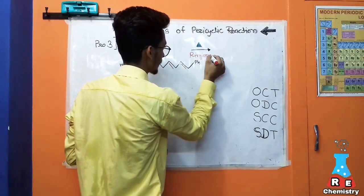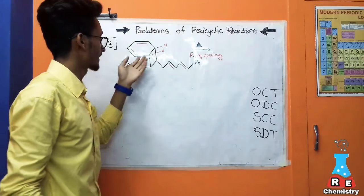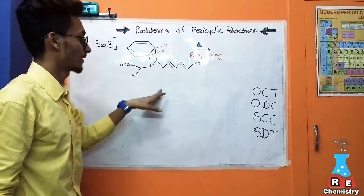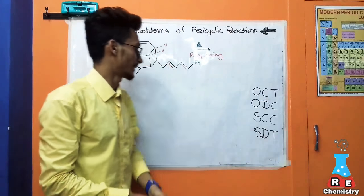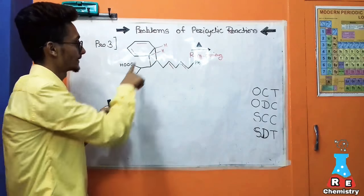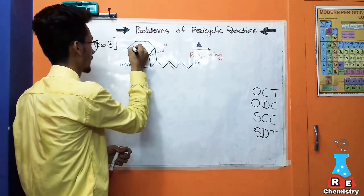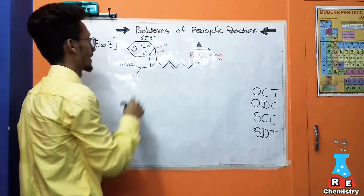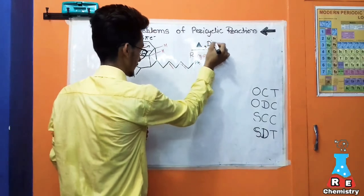In this reaction, total bonds participating: this bond migrates there, this bond migrates there, and this bond migrates there — three bonds. It means this is a 6π electron system. According to the selection rule, it's disrotation. Same direction and disrotation means trans form of substituents. Counting the atoms: 1, 2, 3, 4, 5, 6, 7, and 8 — that means formation of an 8-member ring. Let's number them: 1, 2, 3, 4, 5, 6, 7, and 8.